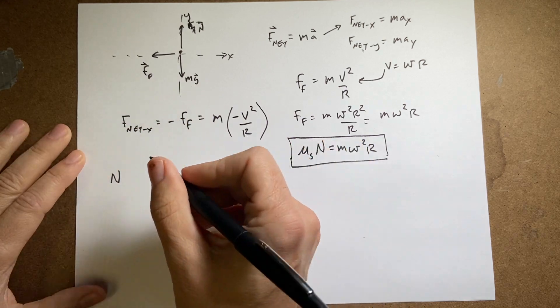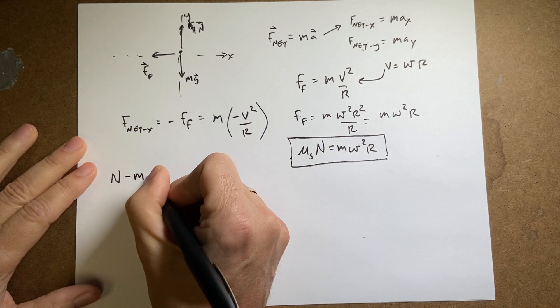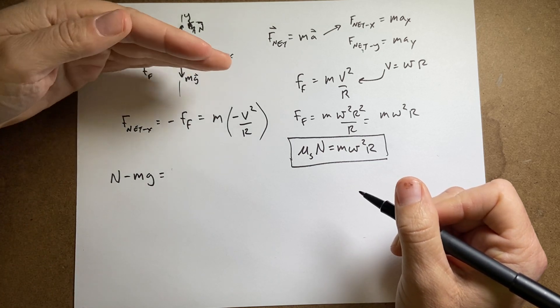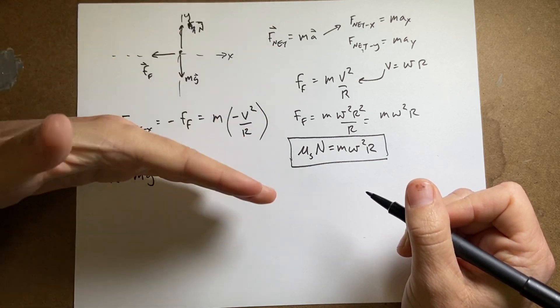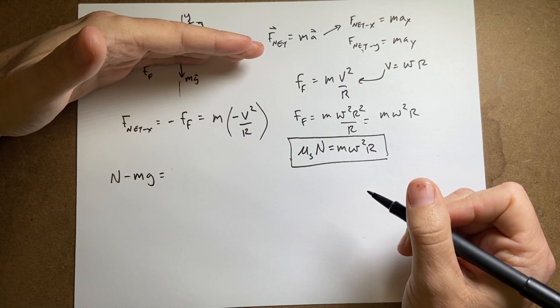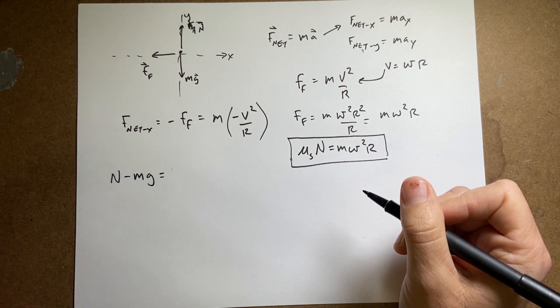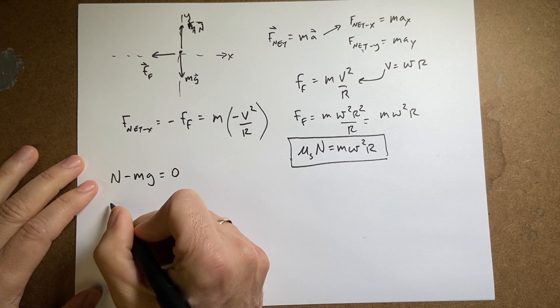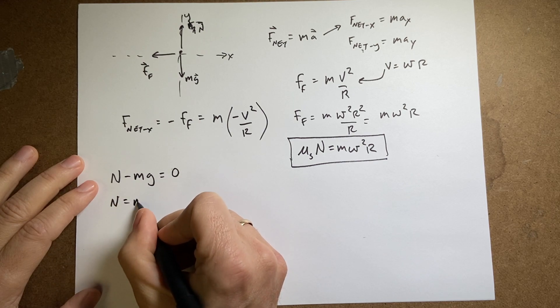So it's going to be negative mg. What is the acceleration in the y direction? Well, the penny doesn't change its vertical position. So it's at zero velocity and it stays at zero velocity in the y direction. So the acceleration is zero. That means I can add mg to both sides and I get n equals mg.